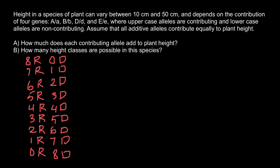How many classes do we have? Let's count: one, two, three, four, five, six, seven, eight, nine possible classes.